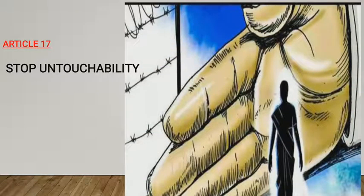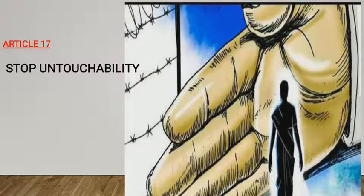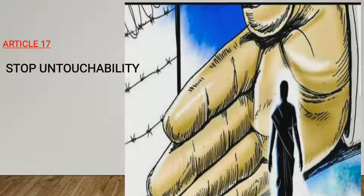Regarding untouchability, it comes under Article 17 in our Indian Constitution. Untouchability is an inhuman product of the caste system. It is an anti-social practice involving the avoidance of a person of a certain caste. In reality, it is a form of social isolation of certain castes and communities. In the past, Dalits faced certain prohibitions from the dominant caste.